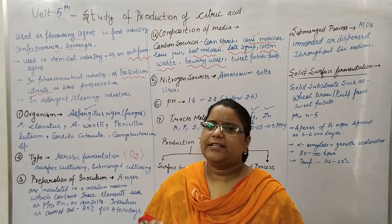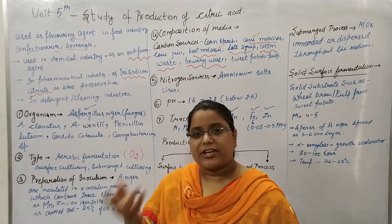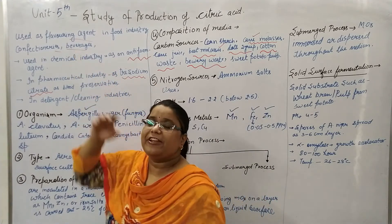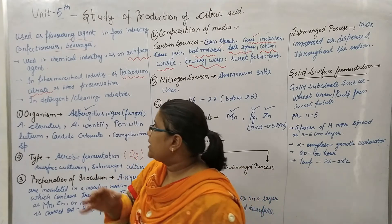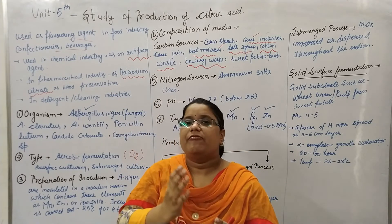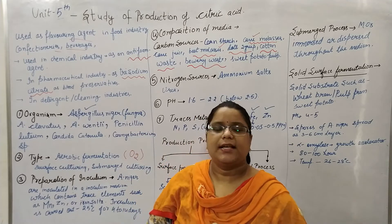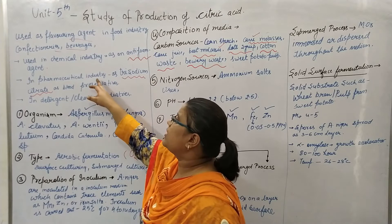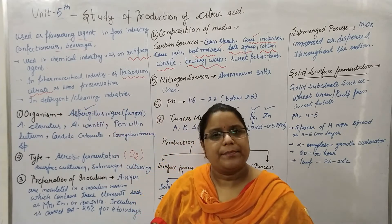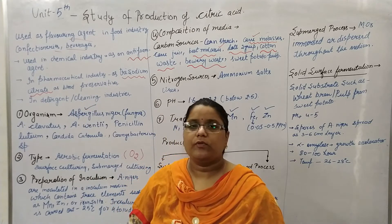First, we discuss the uses of citric acid. Citric acid is utilized in different kinds of industries like pharmaceutical, textile, confectionery, and beverage industries. In confectionery and beverage industries it is used as a flavoring agent. In chemical industries it is used as an anti-foaming agent. In pharmaceutical industries, citric acid salt in the form of trisodium citrate is used as a blood preservative. In detergent and cleaning industries, it is used to remove stains.